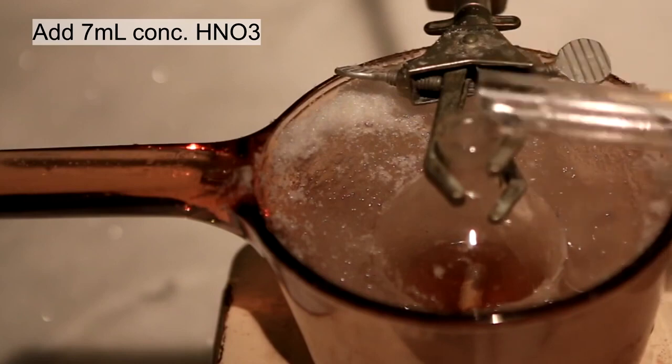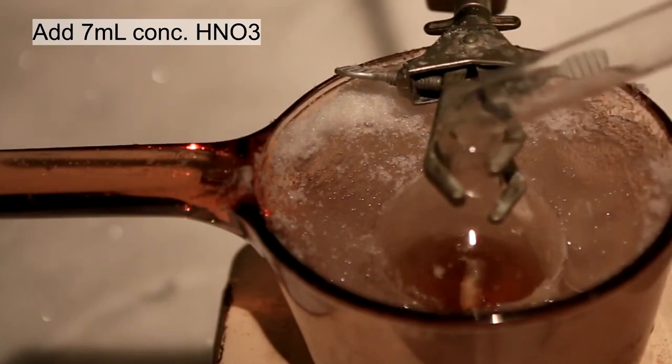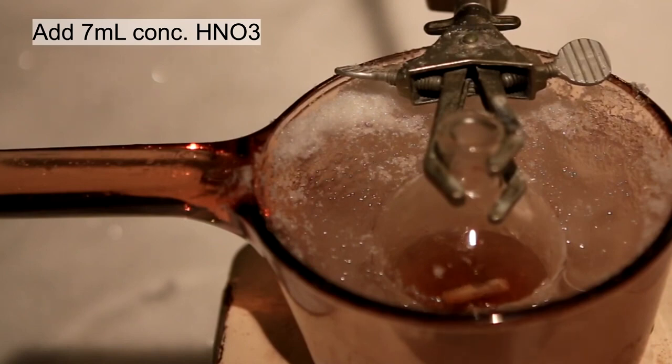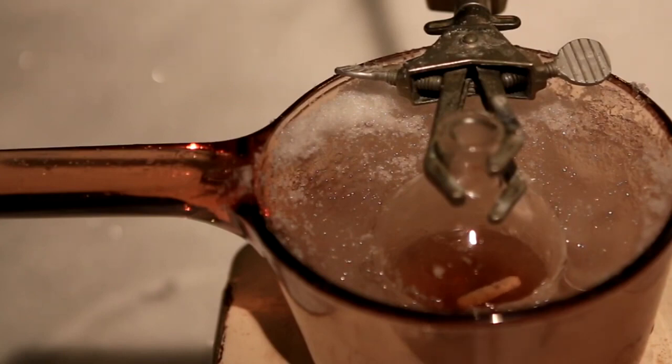With the flask cooled on an ice bath, 7 milliliters of concentrated nitric acid is added. The initial reaction is extremely exothermic, and it's very important to use an ice bath. Prior to the addition, the nitric acid was cooled to about 0 degrees Celsius. Because the nitric acid was cooled down, it takes a little while for the reaction to start going.